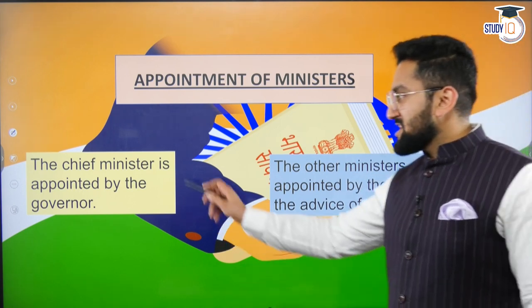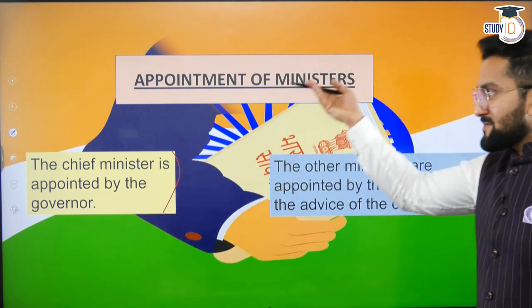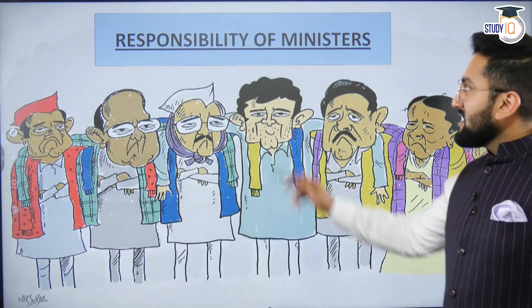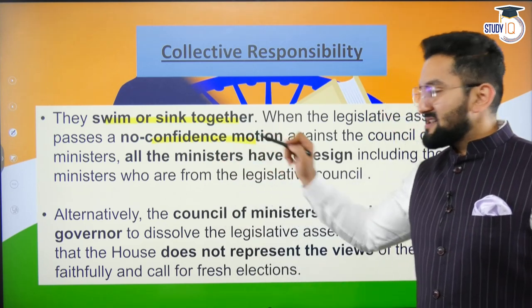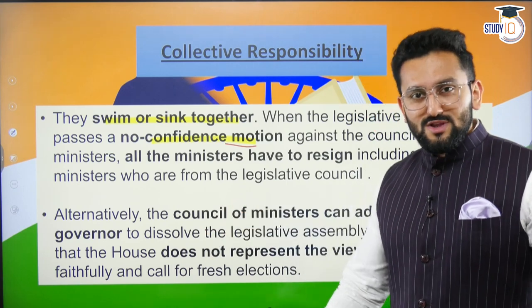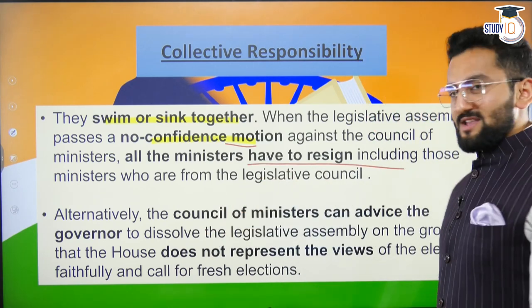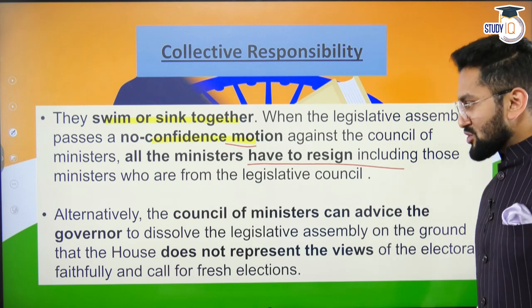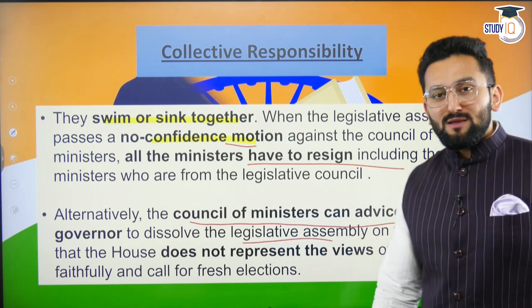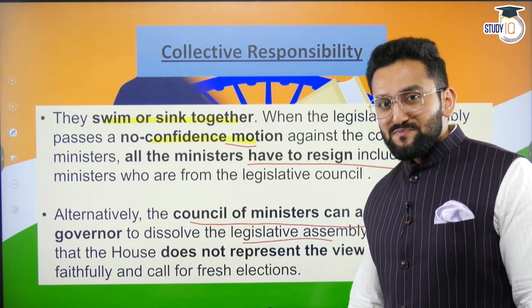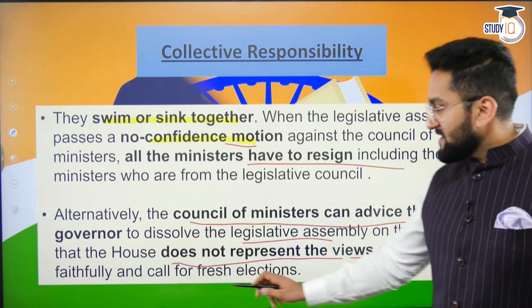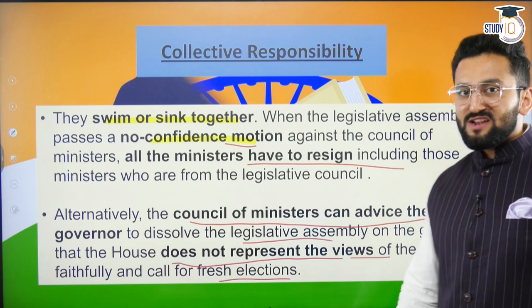Appointment of ministers: the Chief Minister is appointed by the Governor, then the Chief Minister gives the list to the Governor and the Governor appoints other ministers. Responsibility of the ministers: they swim and sink together — if a no-confidence motion is passed, this government stands no chance to continue and ministers have to resign, same as in case of Parliament and Lok Sabha. The Council of Ministers can advise the Governor to dissolve the legislative assembly before time as well, and there can be fresh elections if it does not represent the views of the electorate faithfully.